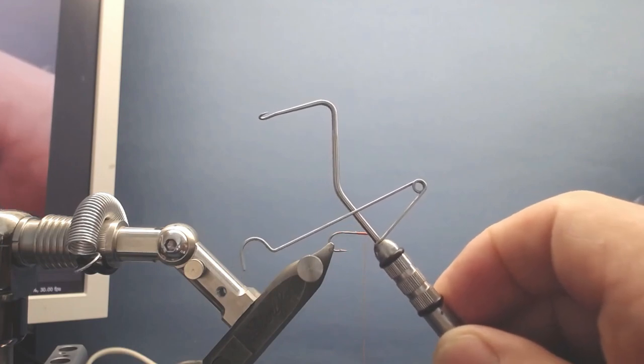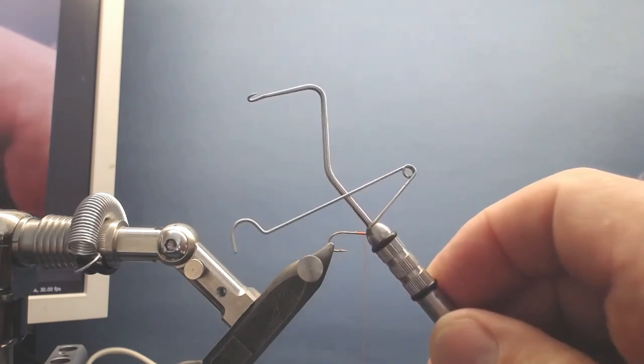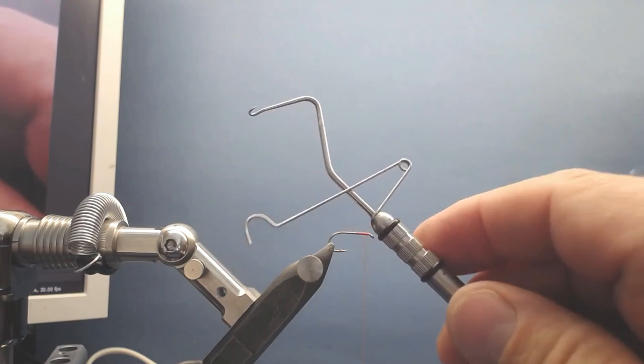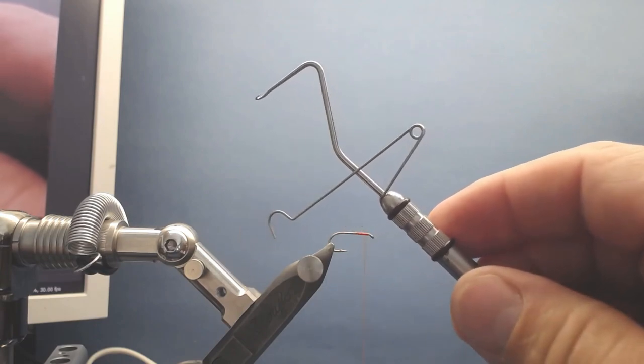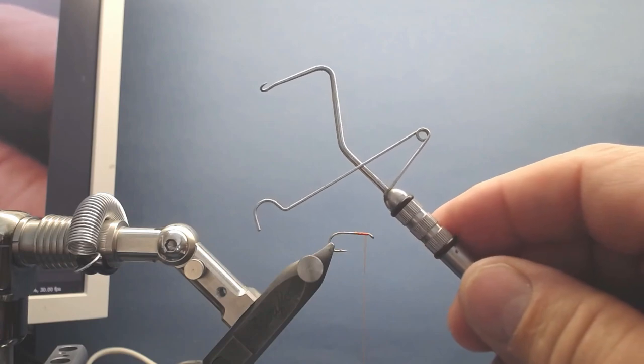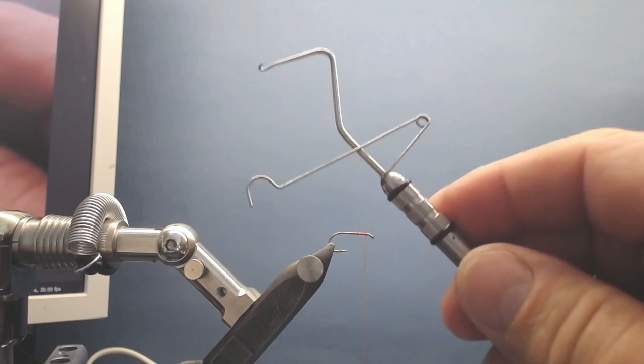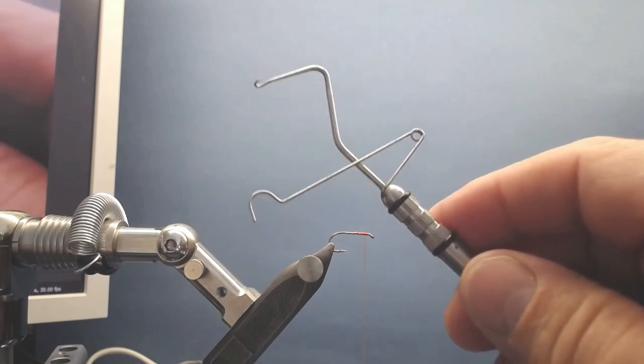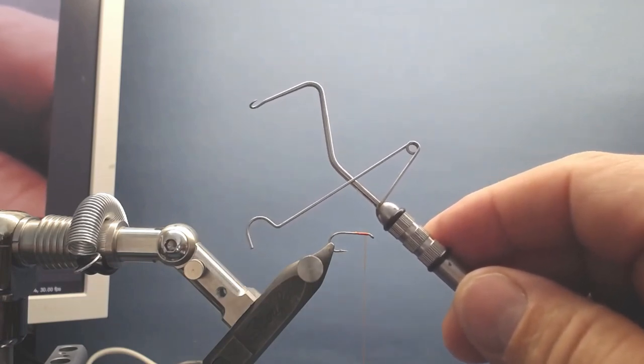This is how it looks. This is a Stonfo whip finisher. I think this looks like the most common whip finisher you can get, so I'm going to teach you how to use this tool. Many people struggle with using this tool.